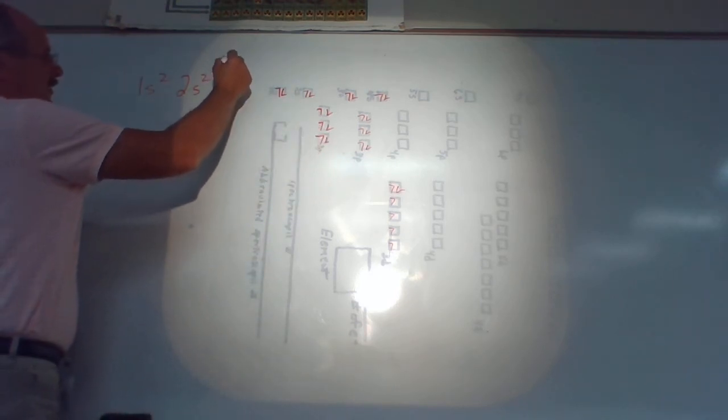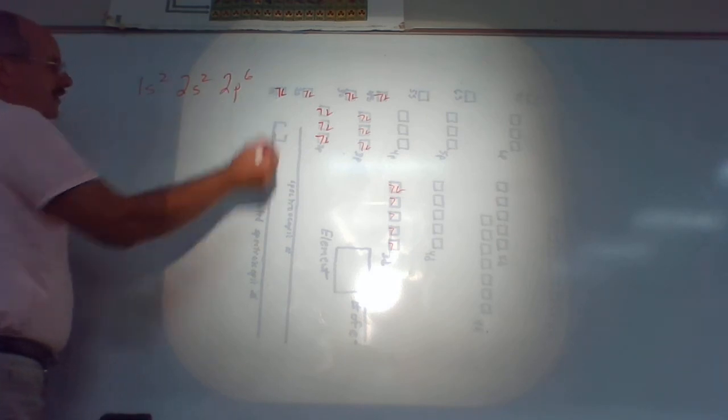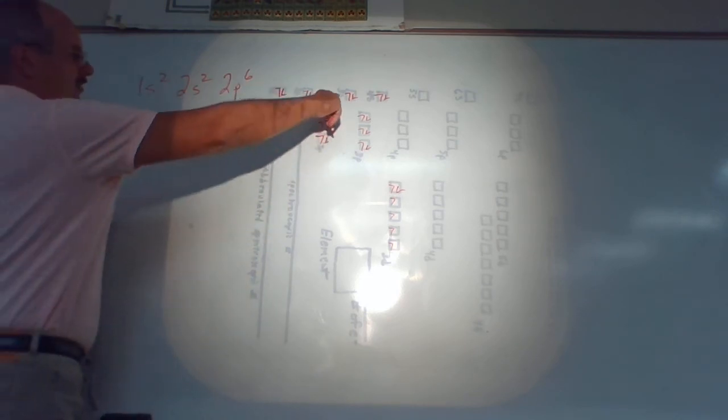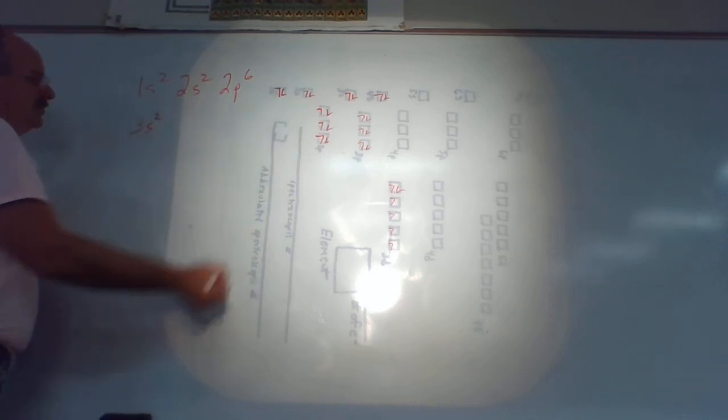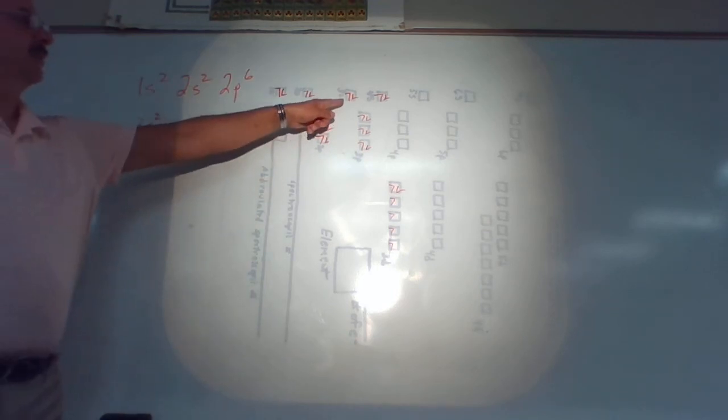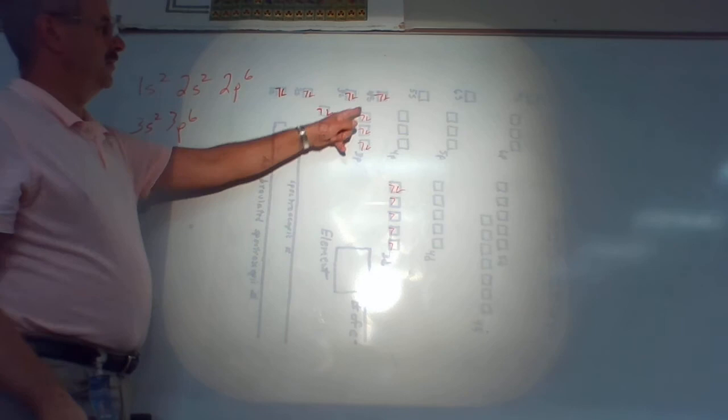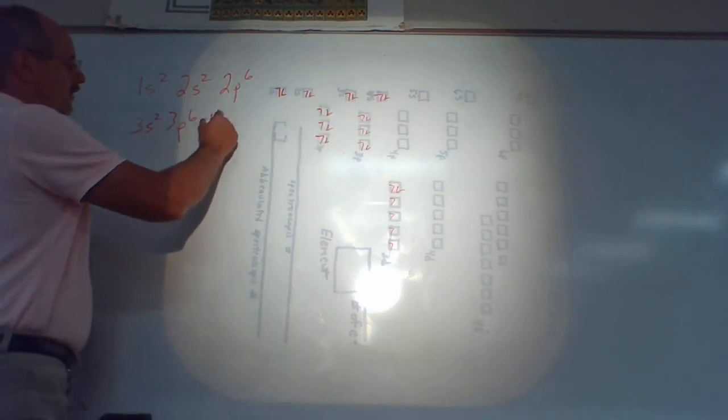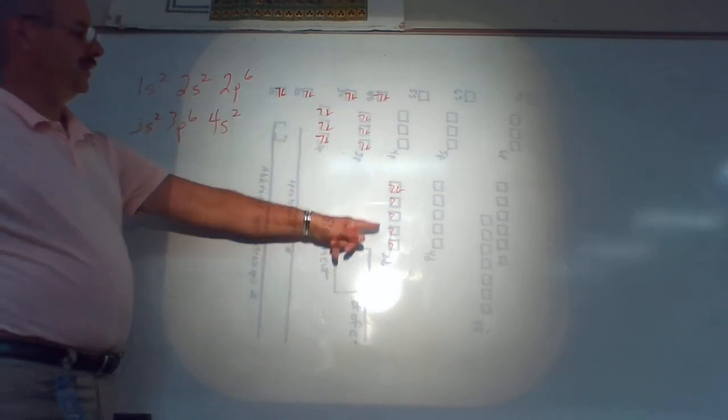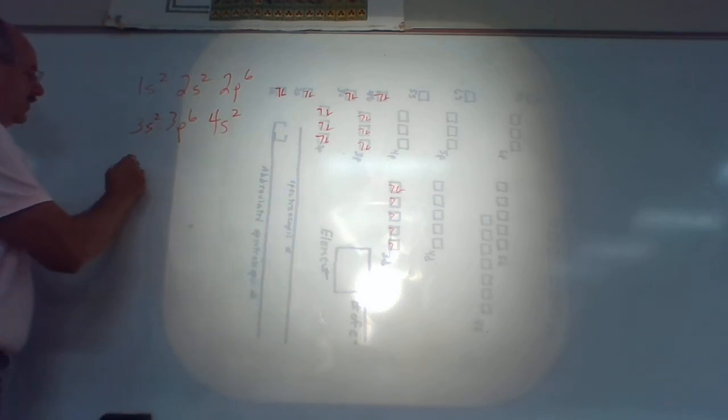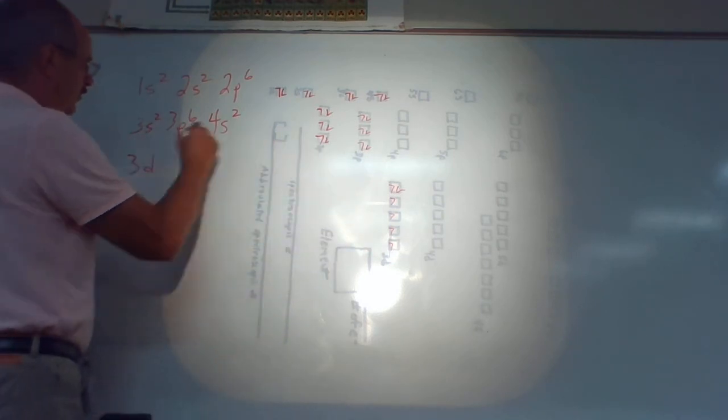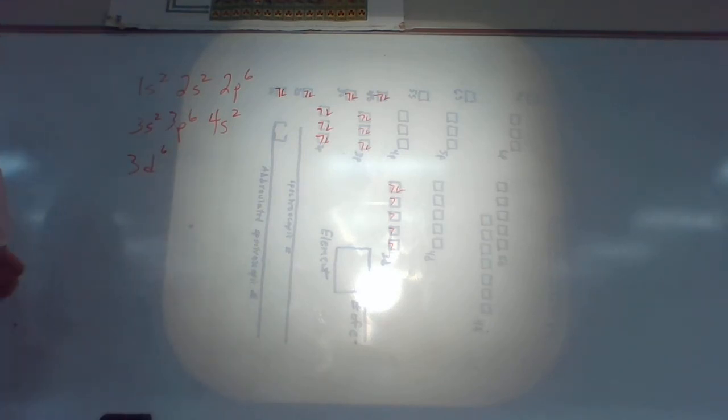Then the next one we filled was this, which will be 2p, and then we put six electrons in there. So that's second energy level, p orbital, six electrons. And now I'm going to jump down just because I'm running out of space. So now we go to the next one, which will be 3s2. That was this spot. The next one I did was this, which is 3p6. Then we go up to this one, which is 4s2. Then the last one we did was this guy down here, which was 3d. It'll hold 10, but remember we only put six in there. So we go 3d6. That's the spectroscopic numbers of it.